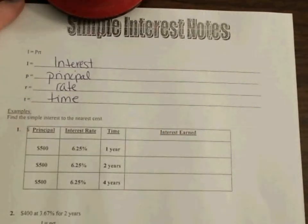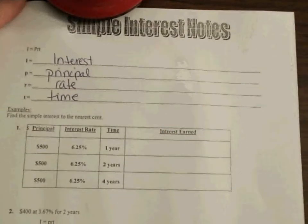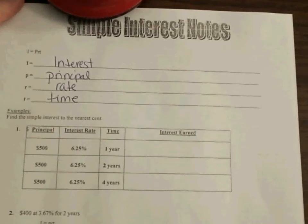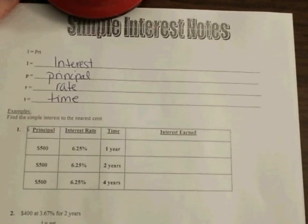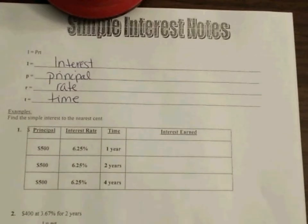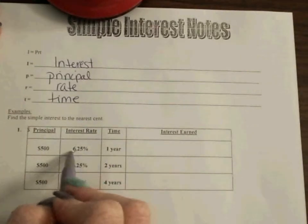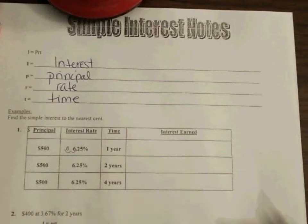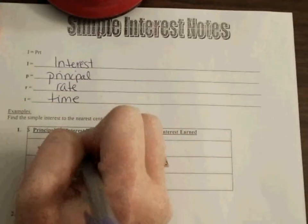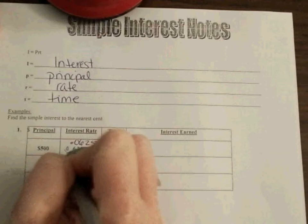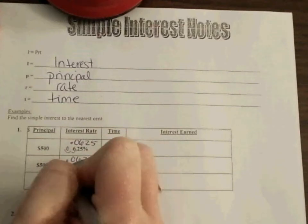So I'm going to show you what that looks like. Number one says find the simple interest to the nearest cent. Now the first thing you always need to do, you immediately need to go to your rates and you need to turn those into decimals. You cannot multiply a number by a percent but we can multiply by a decimal. So remember to move a percent to a decimal, we go two places to the left with our decimal. So this becomes 0.0625 and I'm going to go ahead and write that for all of them because your interest will remain the same.